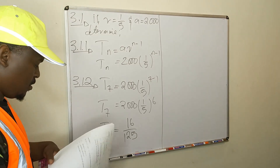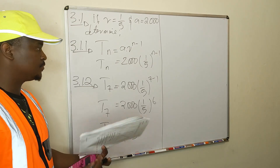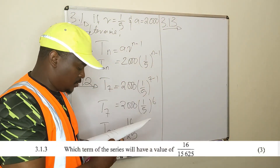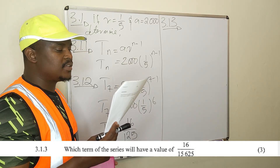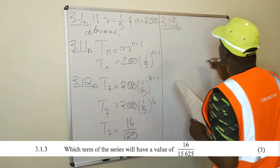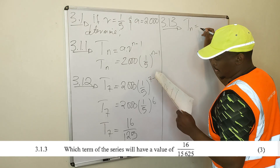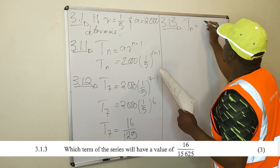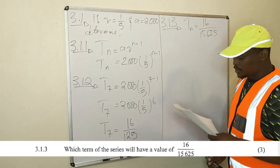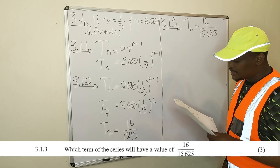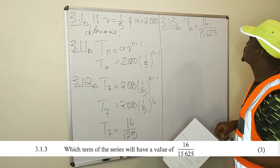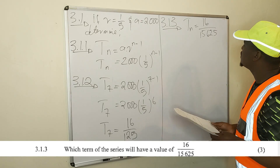For 3.1.3, determine which term of the series will have the value of 16 over 15,625. So they want us to find the position of this term in the series — which term has the value 16 divided by 15,625.